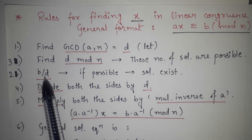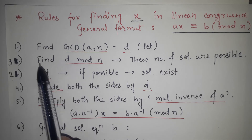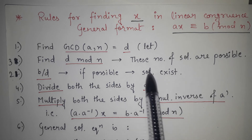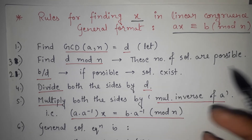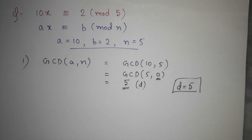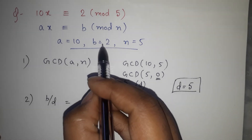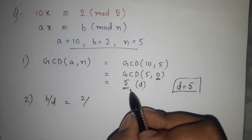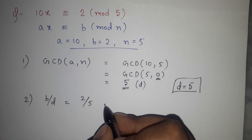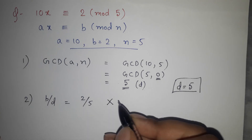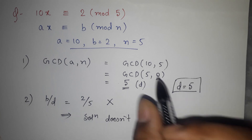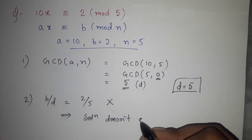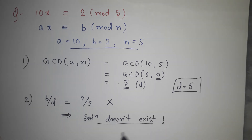Step 2 is finding b/d. If b/d gives a whole number, then a solution exists; otherwise, the solution does not exist and we stop. In our case, b/d = 2/5. Since 2 is not completely divisible by 5, we do not get an exact answer. Therefore, the solution does not exist — meaning the value of x cannot be found — and we stop here.